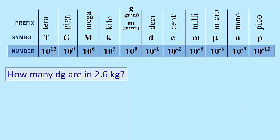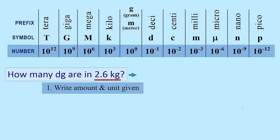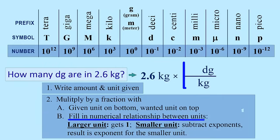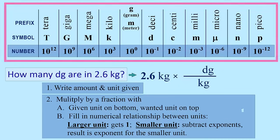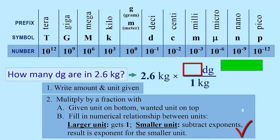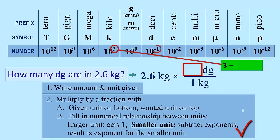For example, how many decigrams are in 2.6 kilograms? We will use a specific algorithm that uses the dimensional analysis setup as follows. First step, write amount and unit given in the problem. Then multiply by a fraction with the unit given on bottom and the unit wanted on top. Now we need to fill in the numerical relationship between decigrams and kilograms, which is where we now refer to the chart. We put a 1 with the larger unit, which is kilograms, and the smaller unit gets a power of 10 determined simply by subtracting the exponents represented by the prefixes.